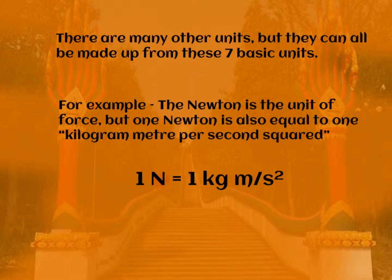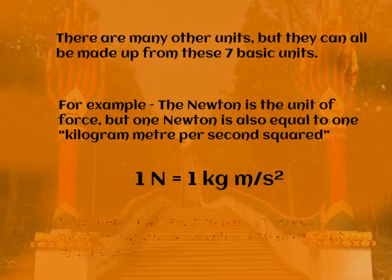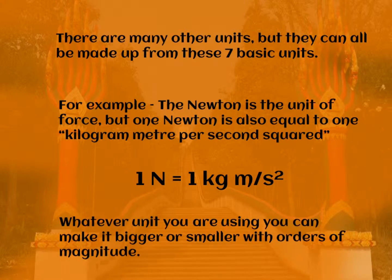There are many other units, but they can all be made up from these seven basic units. For example, we have the newton, which is the unit of force. One newton can be broken down into one kilogram metre per second squared. So those three SI units go together to make the newton. Whatever unit you are using, you can make it bigger or smaller by using orders of magnitude.